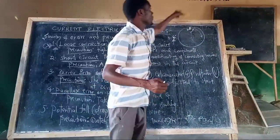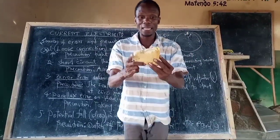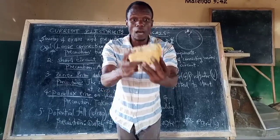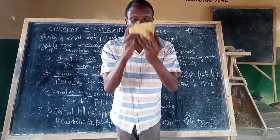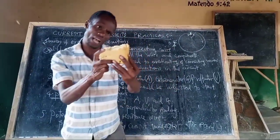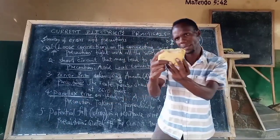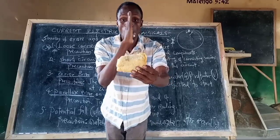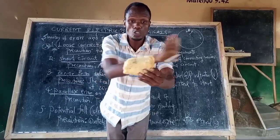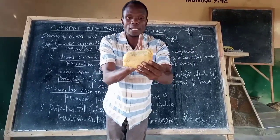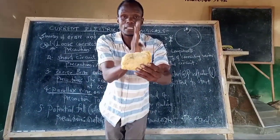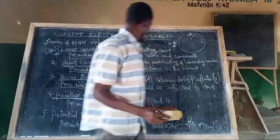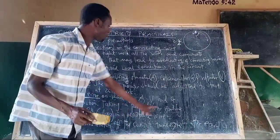Kwa krema mimi, kifaa changu hiki inamaanisha kitazamana hivi perpendicular tumakia eyes. Kinakuwa kinatazamana na macho direct, na sio kwamba unakaa pembeni hivi ama unakaa pembeni hivi. Lazima iwe perpendicular, maanake kifaa chako kiko hapa na macho yako hivi, kiasi kwamba tukichora kifaa chako na macho yako, natengeneza 90 degrees, ambayo ni perpendicular. Kwa hiyo, iwe avoid hiyo kwa taking a perpendicular reading.